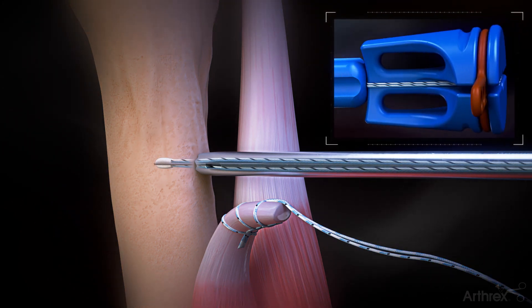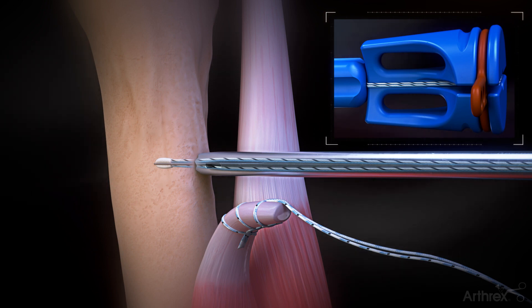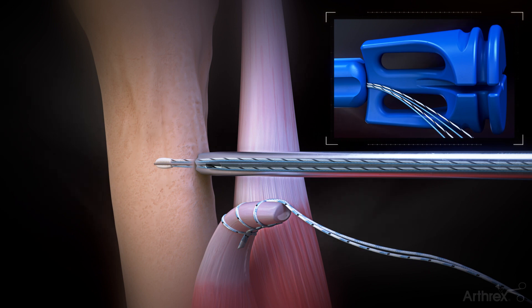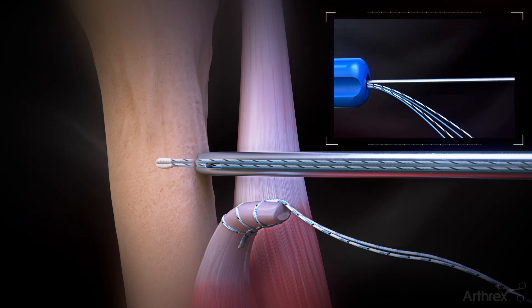Lightly tap on the inserter handle until the inserter is flush with the drill guide. Remove the orange suture release tab to remove the sutures from the inserter handle. Remove the implant inserter and drill guide.